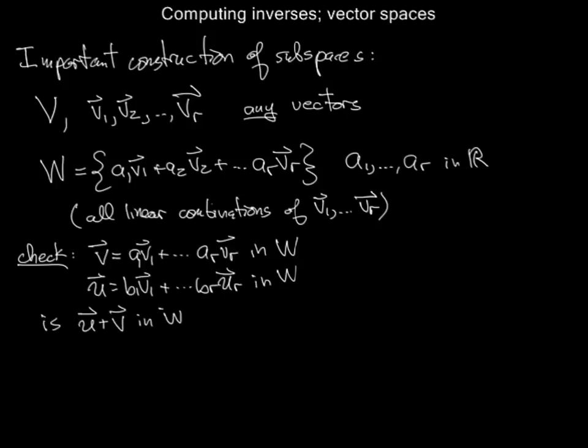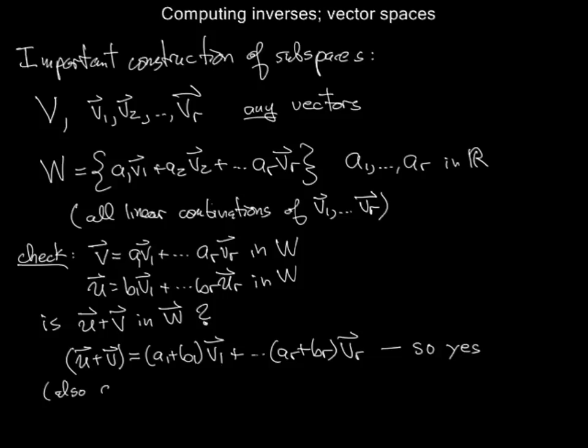U plus V - you have to ask whether that's in W. U plus V, if you work it out, is clearly (A1 plus B1) times V1 plus and so on. So when you add them, you get another linear combination of the vectors. And something similar happens with scalar multiplication.